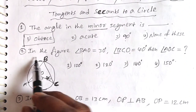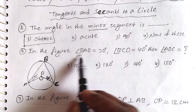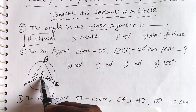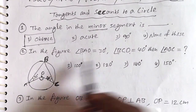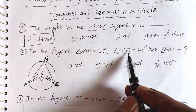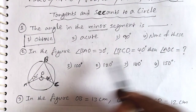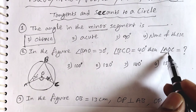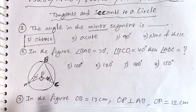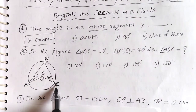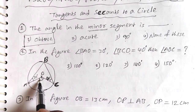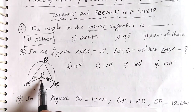Question 2: In the figure, angle BAO is equal to 30 degrees, angle BCO is equal to 40 degrees. Then angle AOC is equal to how much? AOC means this angle here.